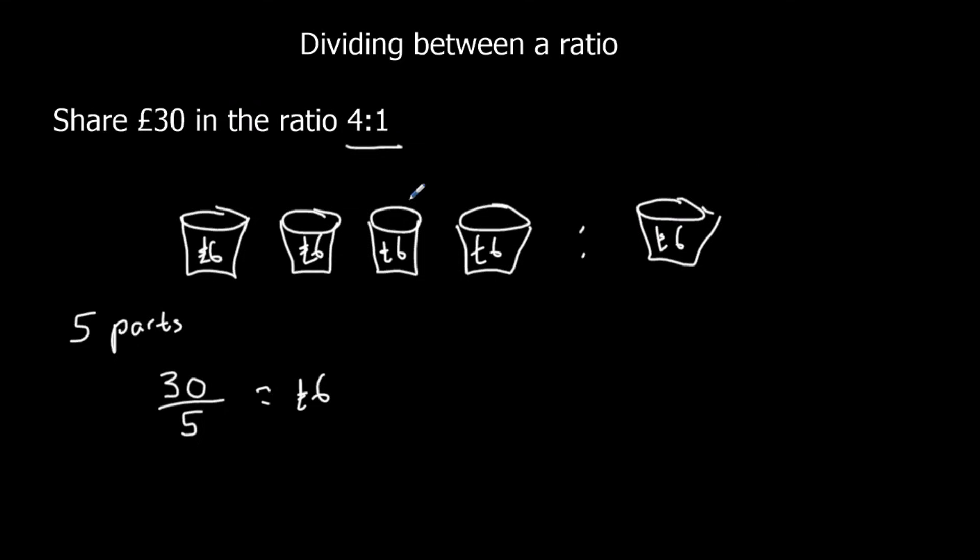And then the first person has got 4, 4 piles of money, 4 cups. So that's 4 times 6, 4 lots of 6, 24. And the second person has got 1, 1 6, so 6. So that's 30 pounds sharing the ratio 4 to 1.